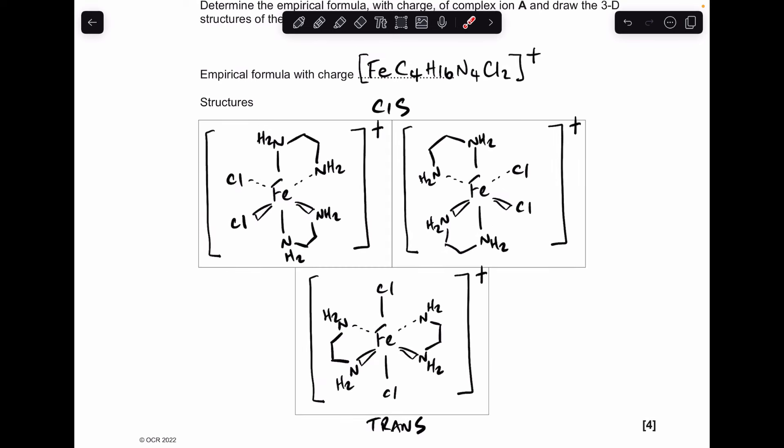Moving on to the structures of the complexes. You can see I've put the cis isomers side by side. That's because they're the optical isomers. Just remember in the cis isomer, you've got the two ligands that you're comparing with each other at 90 degrees apart. So we're comparing these two chlorides, 90 degrees apart there. It's the trans isomer where the ligands are 180 degrees apart. This one doesn't exhibit optical isomerism.